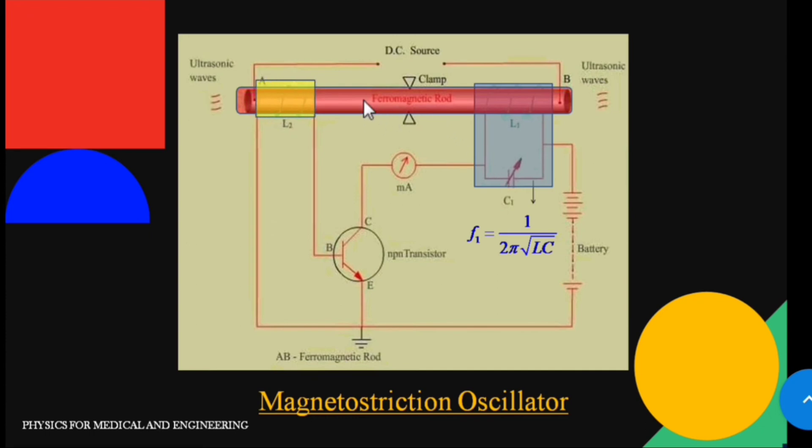The induced EMF is fed into the base of the transistor and hence it gets amplified. This amplified EMF is fed into the tank circuit which again causes the change in the length of the rod. In this way, oscillation is continuously maintained. The frequency of the oscillation of the rod is controlled by the variable capacitor C.